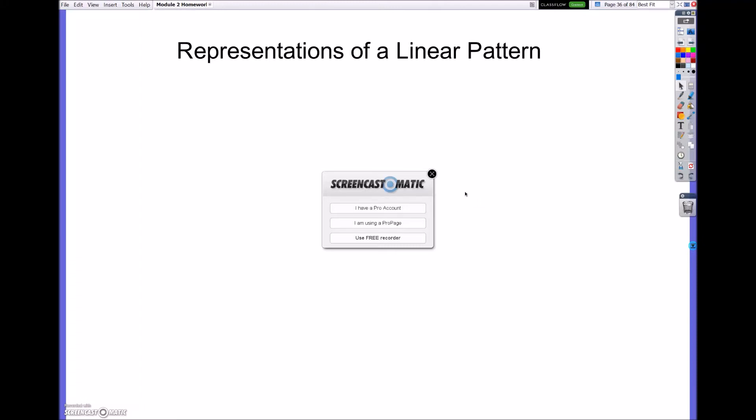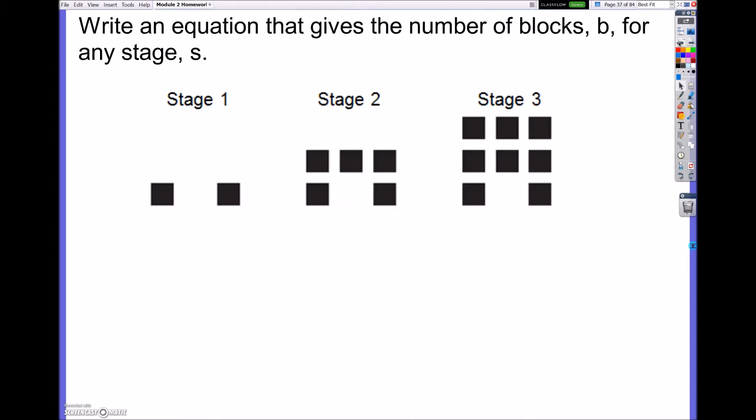Hey everybody! We're going to continue this process of looking at representing a linear pattern. So what we're going to do is look at another pattern, and let's see if we can figure out what's going on here. It says write an equation that gives the number of blocks, b, for any stage, s. So if I tell you stage 1, stage 2, stage 3, I want you to be able to tell me how many blocks are going to be there.